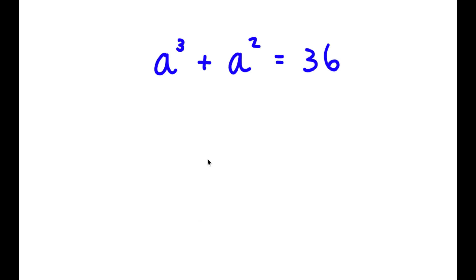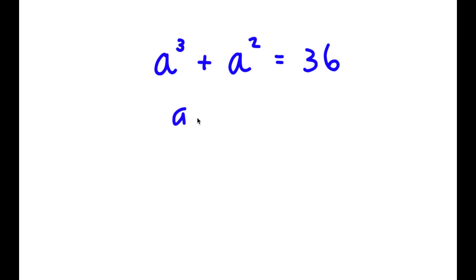Alright, so in this problem I have a to the power of 3 plus a squared equals 36. To find all solutions, I need to first find one solution by plugging in numbers. Plugging in 1 gives 2, which is wrong. Plugging in 2 gives 8 plus 4 equals 12, which is wrong. Plugging in 3 gives 27 plus 9 equals 36 — correct! So a equals 3 is one solution.